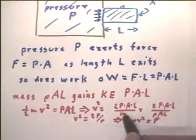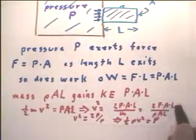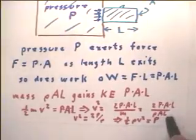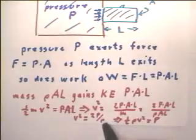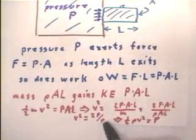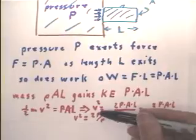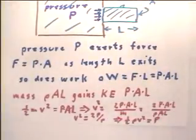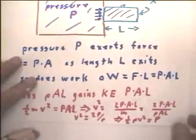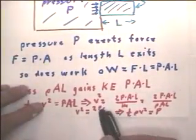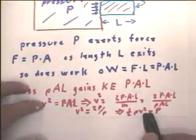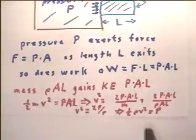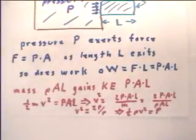And the mass is rho AL, so we have 2PAL over rho AL, which means that the velocity squared comes out to be 2 times the pressure over the density rho. Now it might be a little hard to distinguish capital P pressure from little P rho, but this is pressure, this is rho. Now if we rearrange this and just solve for the pressure, we see that the pressure is one-half rho V squared. Okay? And that's going to be important when we look at Bernoulli's equation.